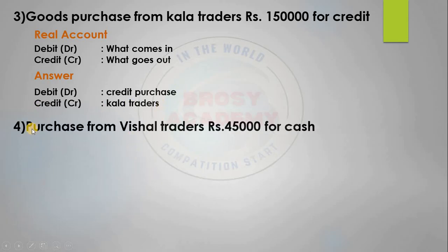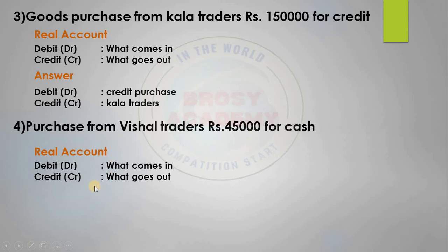Fourth question: Purchase from Visual Traders Rs. 45,000 for cash. Cash is mentioned. So for purchase, real account applies — what comes in is debited, what goes out is credited. Debit purchase, credit cash.